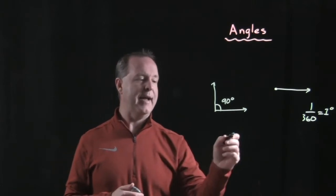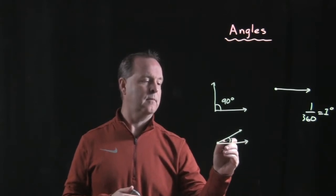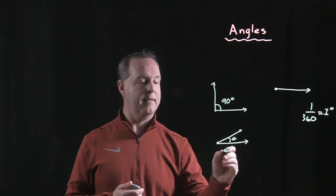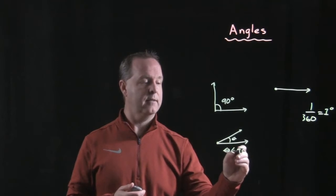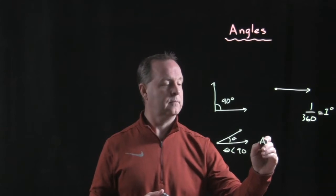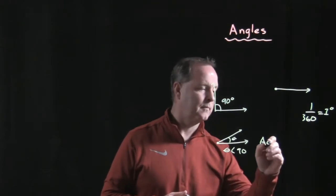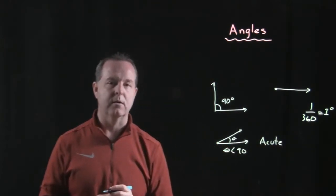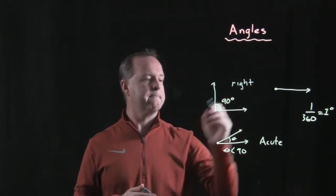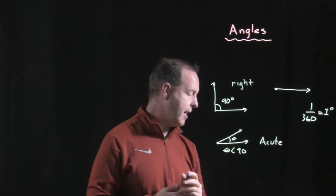If I had an angle that was less than 90 degrees, so some theta that's less than 90 degrees, we would call this one an acute angle. So less than 90 degrees is acute, right at 90 degrees is called a right angle.